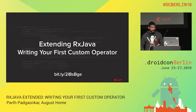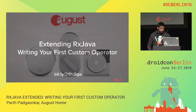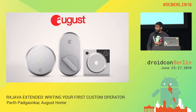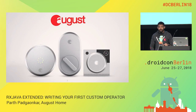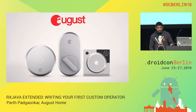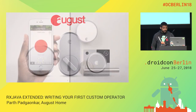My name is Parth. I work at August Home, and today I am delighted to be discussing how to write your first custom operator. August Home makes Bluetooth smart locks and other smart home access hardware. It's a really fun company based in San Francisco.